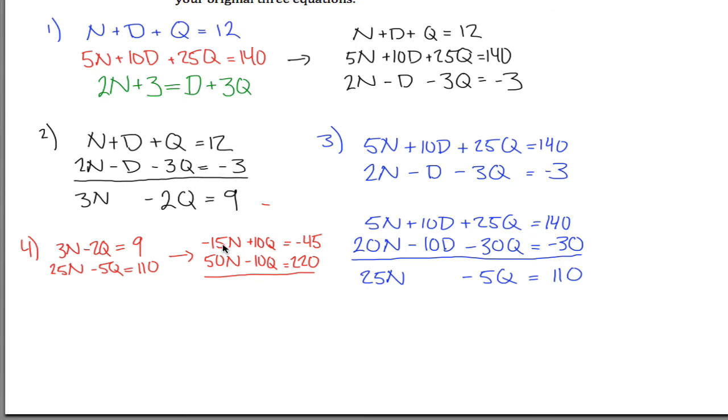So if I add up here, I have negative 15N and 50N, that leaves me with 35N, got no Q's, and then 220 minus 45, what is that, 1, did I mess this up, no, that's right, 175.